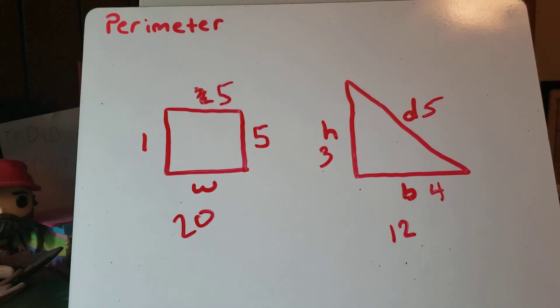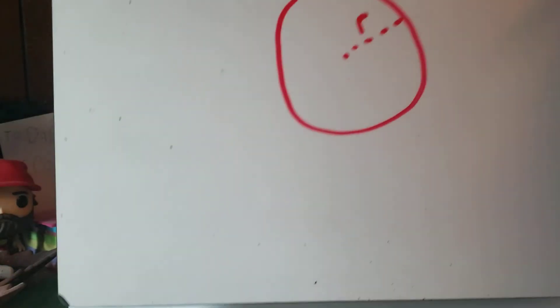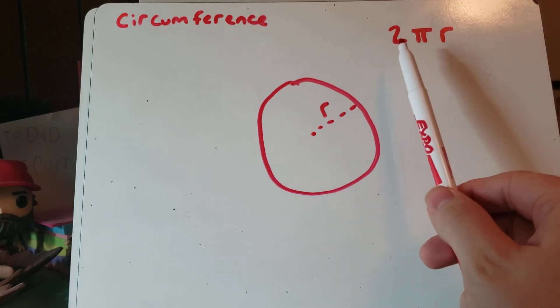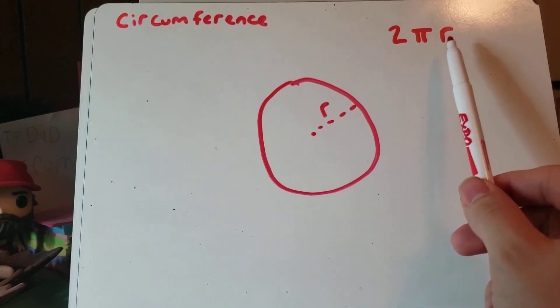Now circumference is a little bit different, and it's only for circles. So here I've got a circle, and it's got a radius. Remember, radius is the distance from the center of the circle all the way to the outside of the circle. And so to find the circumference, you need to use an equation: two times pi times r.